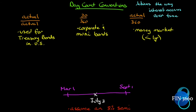Let's throw an example on this. On the timeline: a coupon payment on March 1st, a coupon payment on September 1st, and we're at July 3rd. We'll assume an 8% semi-annual bond. What would be the accrued interest if we purchase this bond on July 3rd — under each of these day count conventions?